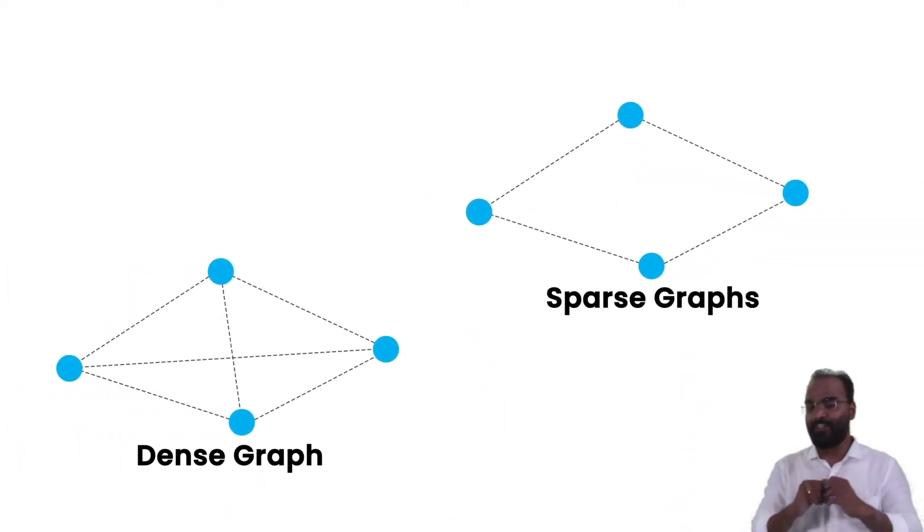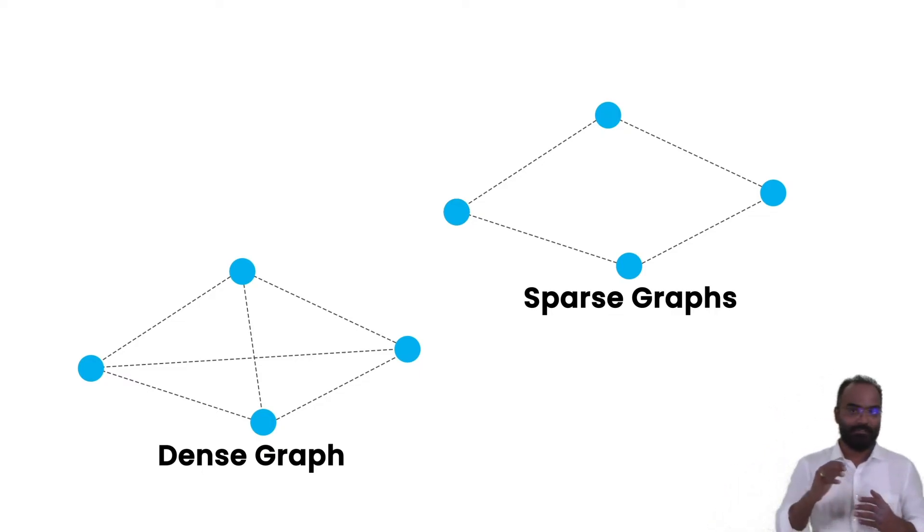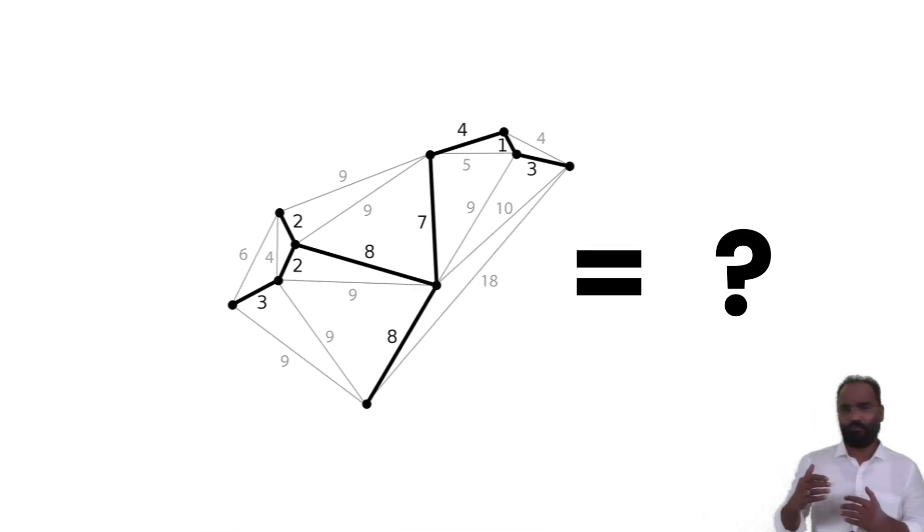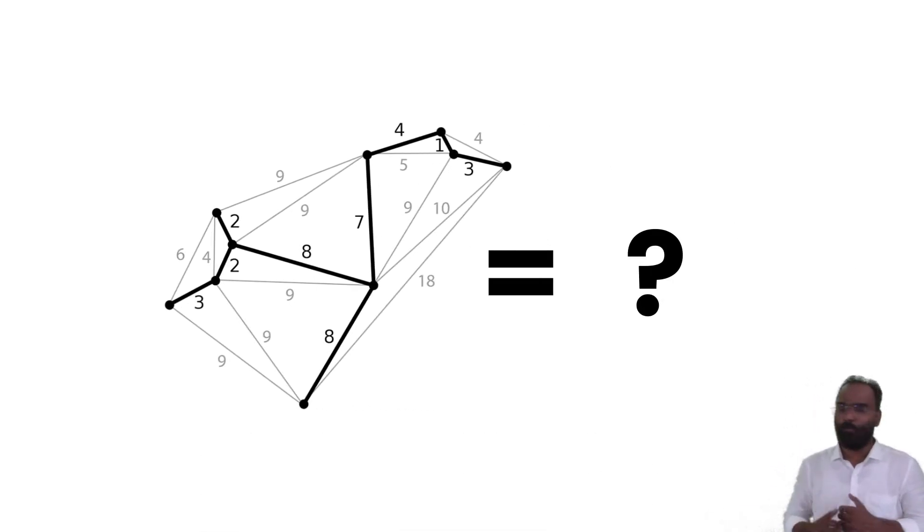So this is very important, dense graph and sparse graph, important when you actually go and learn minimum spanning tree. In order to understand what is a minimum spanning tree, why we actually search for a minimum spanning tree in a graph, then it would make a lot of sense.